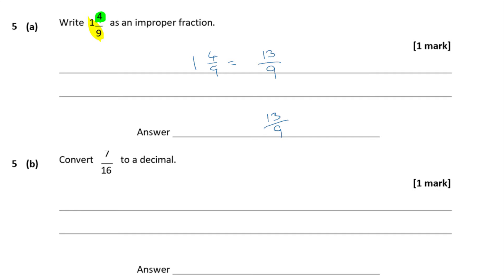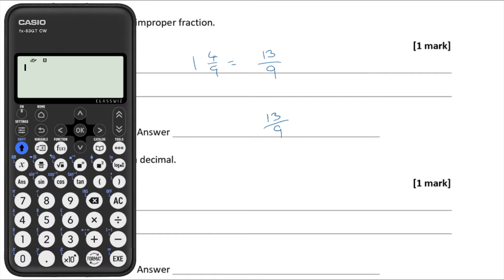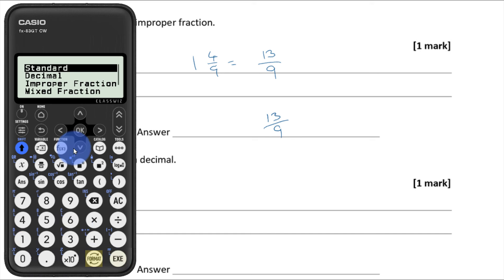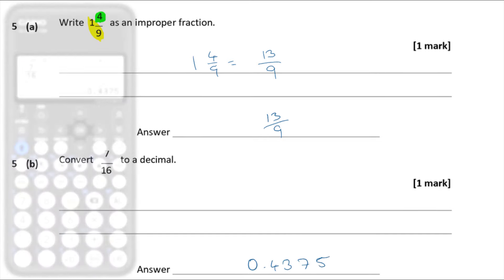Question 5b — convert seven over 16 to a decimal. Luckily this is the calculator paper, so I can just type seven divided by 16 into my calculator. The answer is 0.4375.